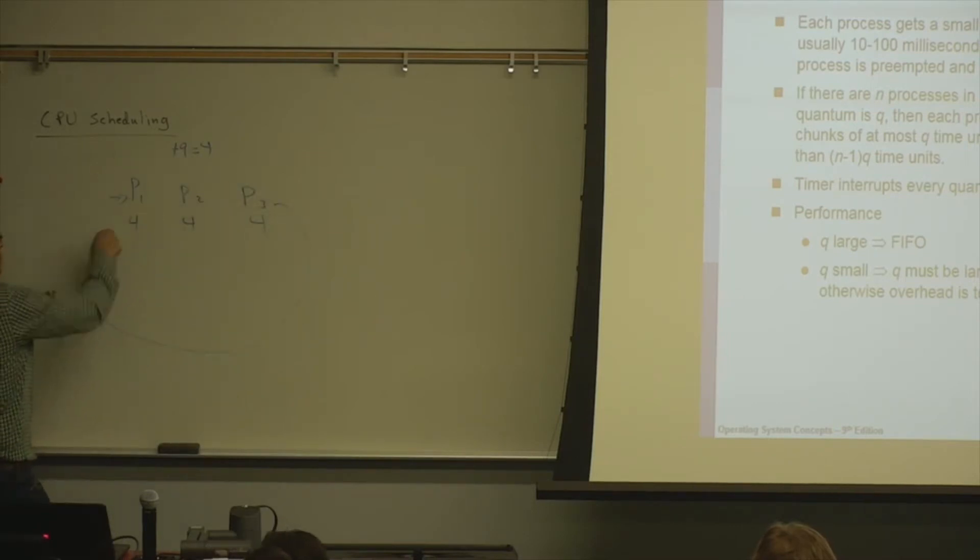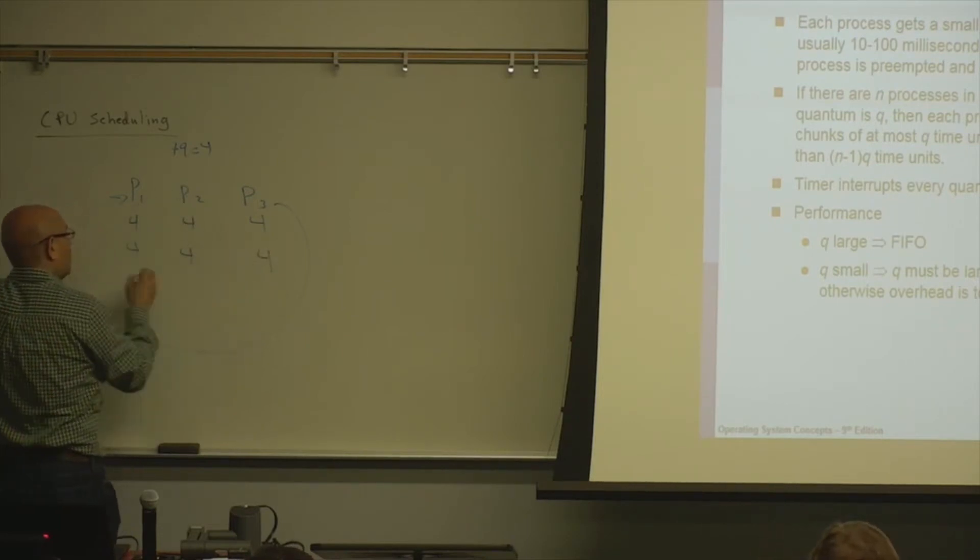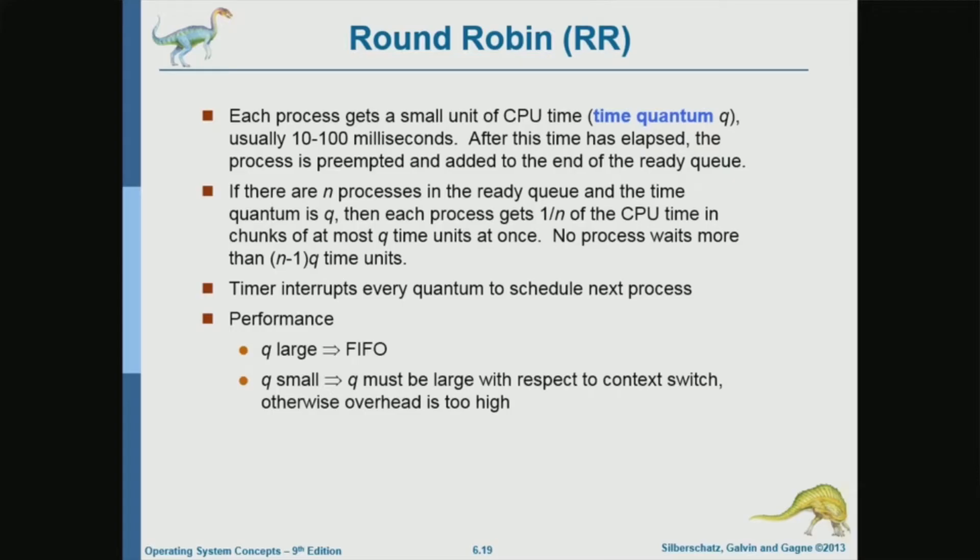Then you go in a round robin manner, you go again to P1 and you give it another 4, then you give another 4 to P2 and another 4 to P3, then 4 to P1, and so forth. It's round robin, so you go around and you give the same time quantum to each process.